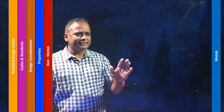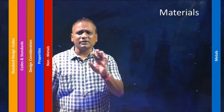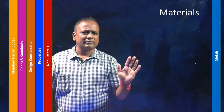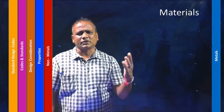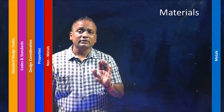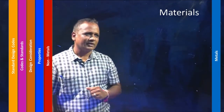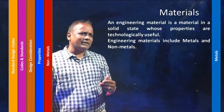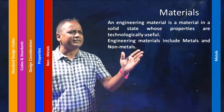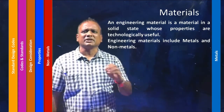First is to understand the metals. Metals should be such that they should be very useful to the technological aspects. But prior to that, metal should be abundantly available easily and should be very cost effective. So an engineering material is a material in a solid state whose properties are technologically useful.